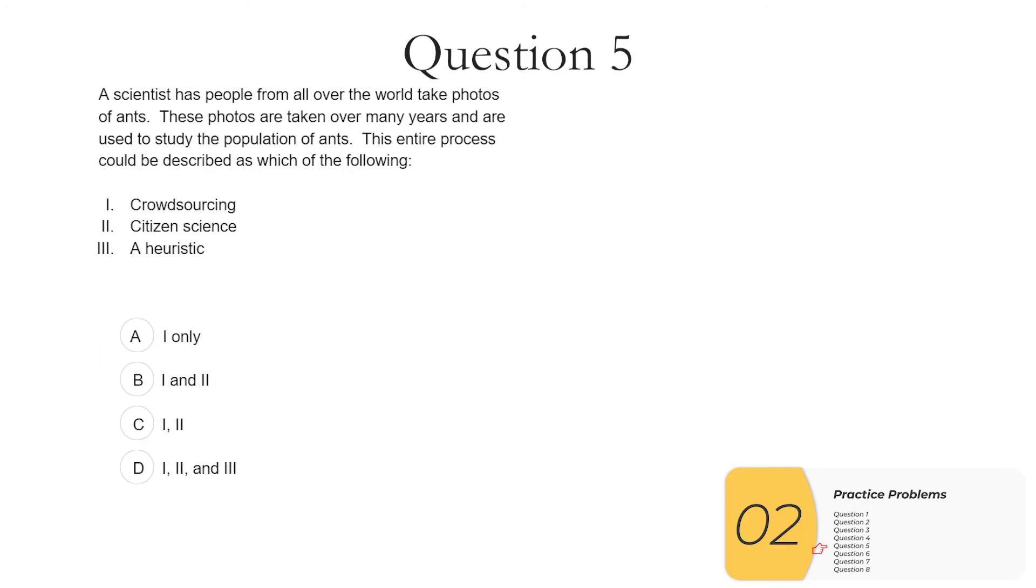Question five, a scientist has people from all over the world take photos of ants. These photos are taken over many years and are used to study the population of ants. This entire process can be described as which of the following? One, crowdsourcing. Well, it's definitely crowdsourcing. You have photos from all over the world. So A is true.